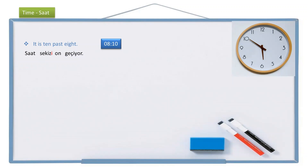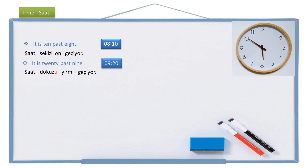Let's see one more example: it is 20 past 9. But we are going to say it is 20 minutes passing 9. It is: saat, 20 — yirmi, passing — geçiyor, 9 — dokuz, with the accusative suffix — dokuzu. It is 20 past 9: saat dokuzu yirmi geçiyor.